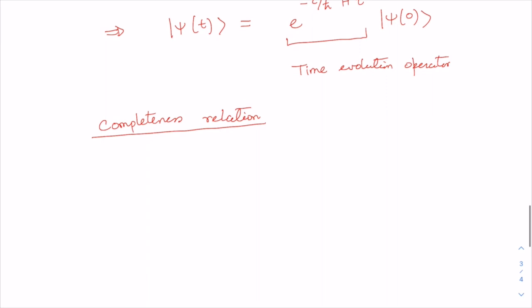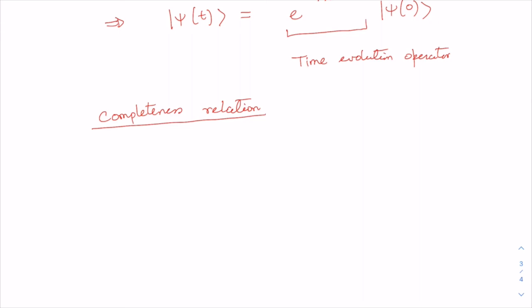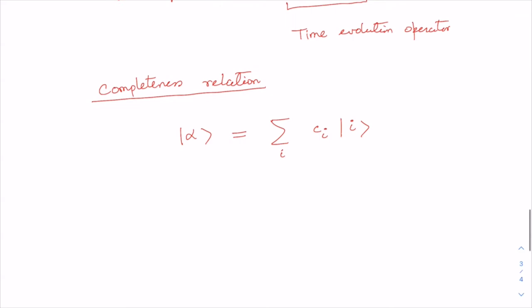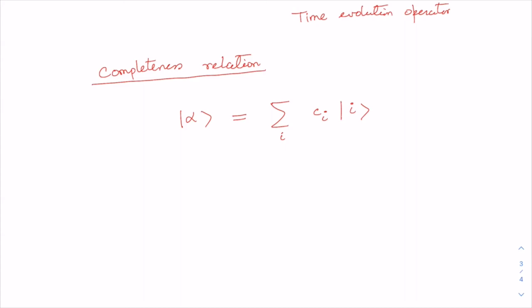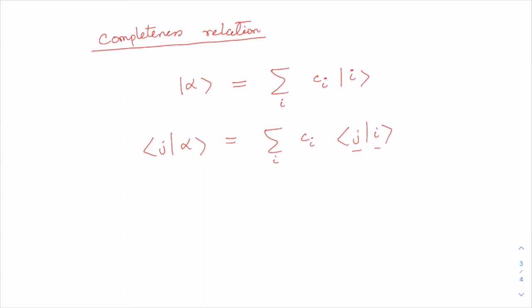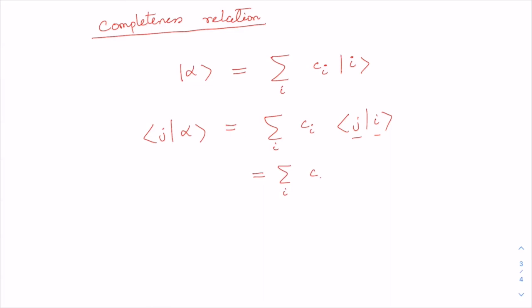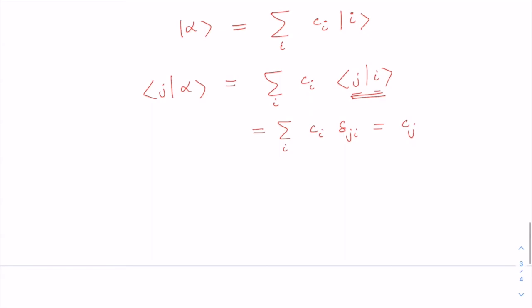One very useful relation in quantum mechanics is the completeness relation, also called the closure relation. Any arbitrary state vector |α⟩ in Hilbert space can be expanded in terms of the eigenkets of a Hermitian operator as |α⟩ = Σᵢ cᵢ|i⟩. If I multiply both sides by bra ⟨j|, and using the orthonormality condition ⟨j|i⟩ = δⱼᵢ, I get cⱼ = ⟨j|α⟩. Therefore, I can write cᵢ = ⟨i|α⟩, and substituting back: |α⟩ = Σᵢ |i⟩⟨i|α⟩. Since ⟨i|α⟩ is a number, I can rearrange to get |α⟩ = (Σᵢ |i⟩⟨i|)|α⟩, which shows that the outer product Σᵢ |i⟩⟨i| acts as the identity operator — this is the completeness condition.